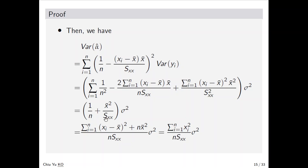Collecting the remaining terms: S_xx appears in the numerator from one part and n times x-bar squared from another. Expanding (x_i minus x-bar) squared as x_i squared minus 2 x_i x-bar plus x-bar squared, the cross terms cancel — minus 2 x_i x-bar plus 2 x_i x-bar equals zero — yielding the final simplified variance expression for alpha-hat.